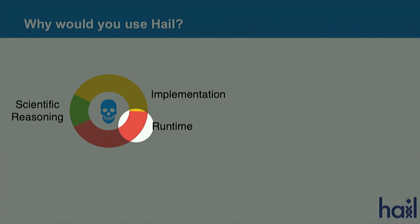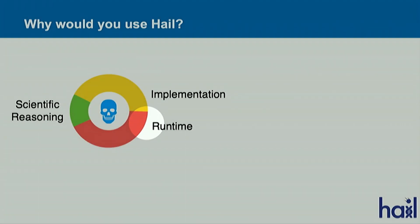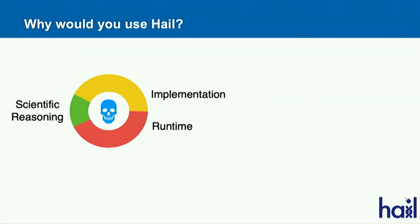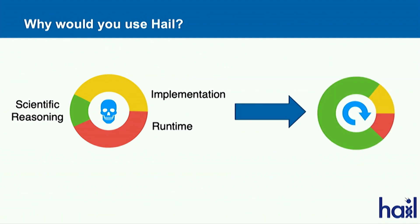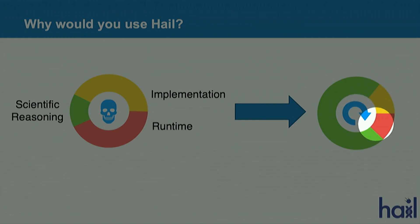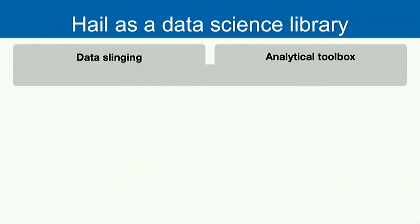When you finally get it running it takes even longer, leaving little time for scientific reasoning. As geneticists, we're here to talk about the science, learn about disease, help our patients, and move our questions forward. Hail aims to minimize implementation time so you can focus on your science.